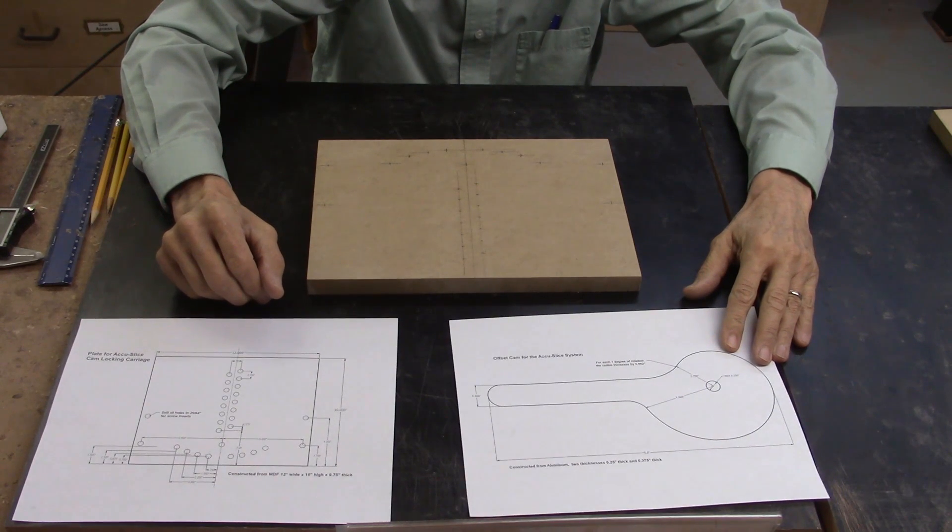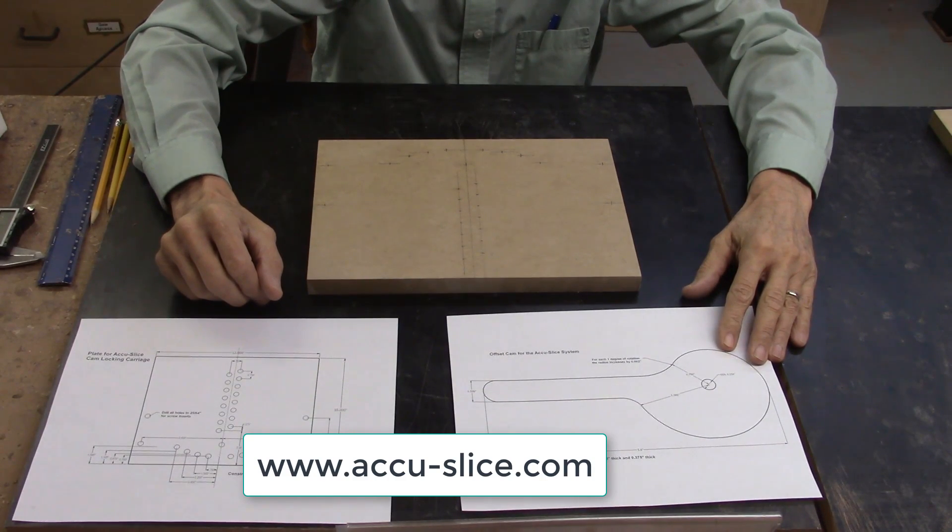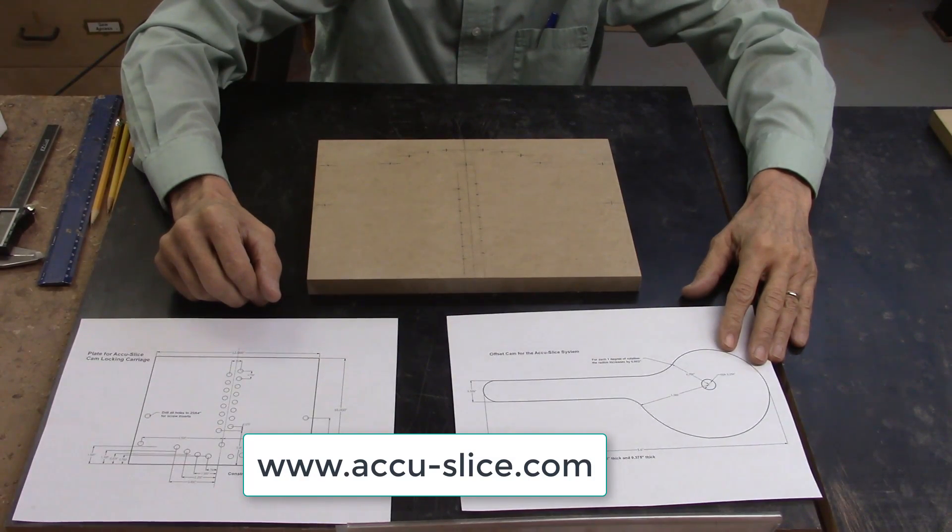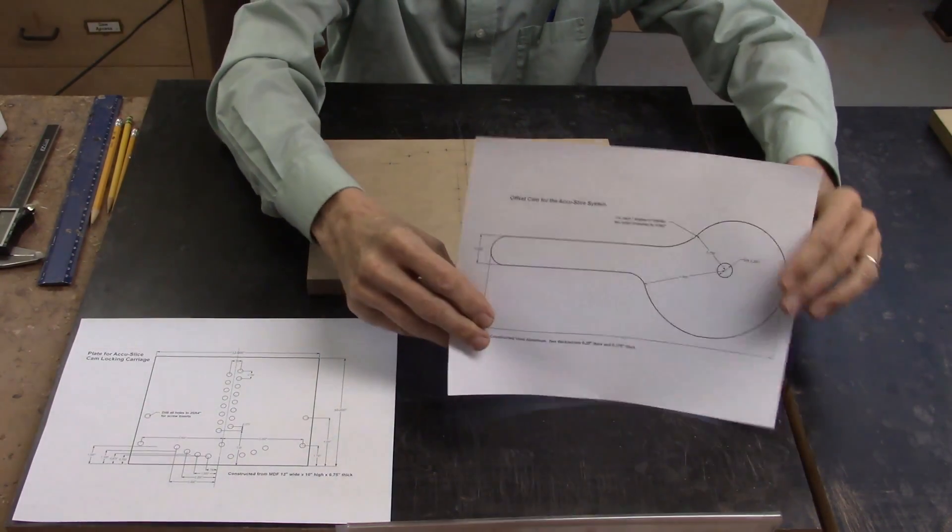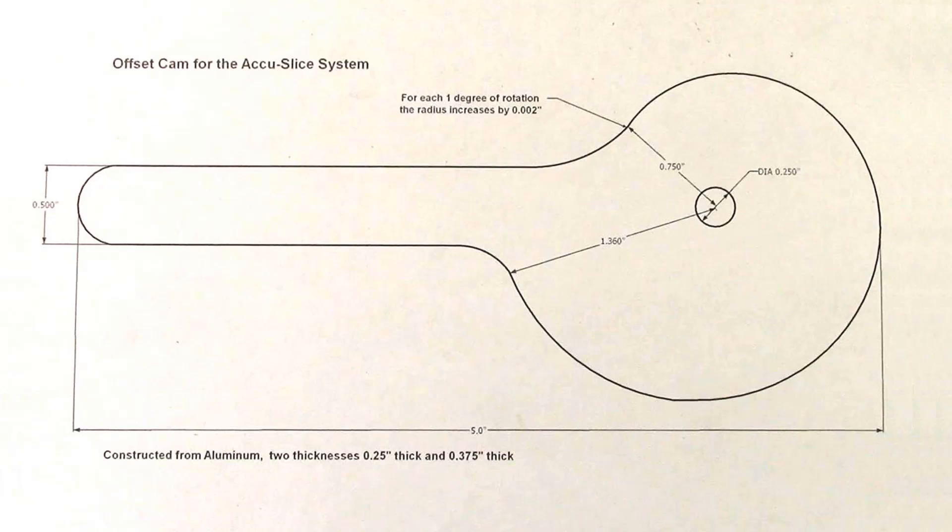Both the original SketchUp files as well as some PDF sheets on this design will be posted on our website for your downloading if you want to make one of these in your shop. I anticipate that our machine shop will be fabricating these offset cams since this is the most difficult component to make in the system.